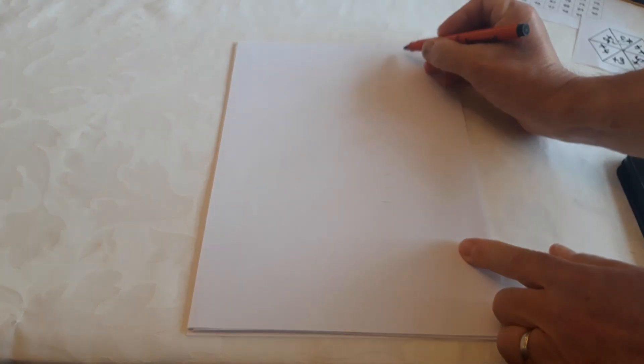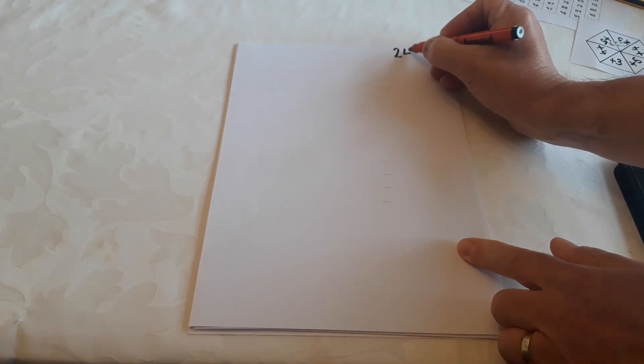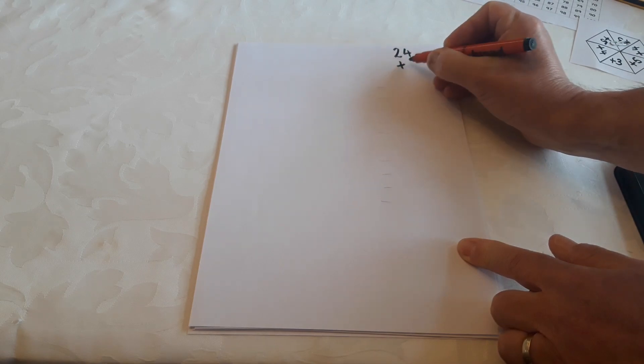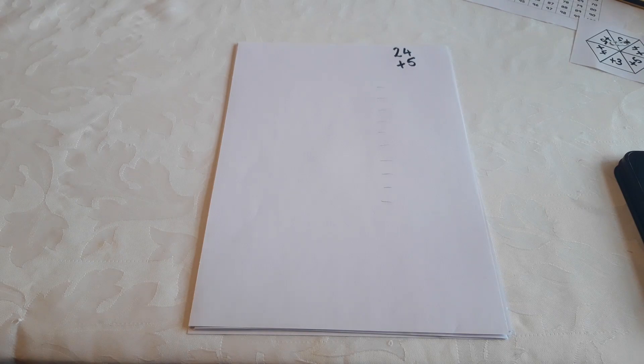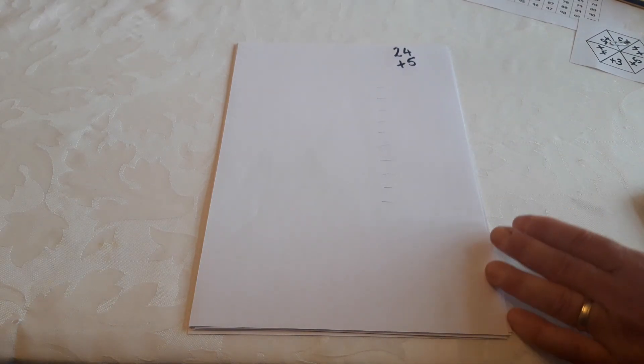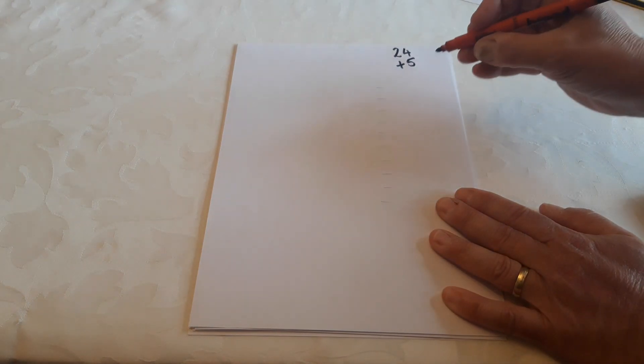So my starting number is 24. Write that there and my step size is counting in fives. And remember, I am being timed to see how quickly I can write the next 10 numbers in that sequence. 3, 2, 1, start.